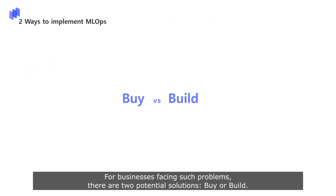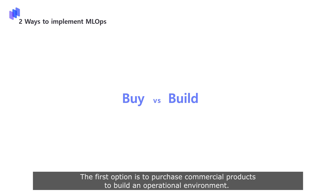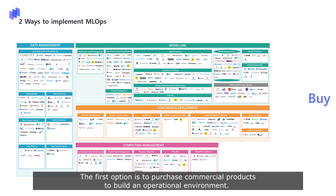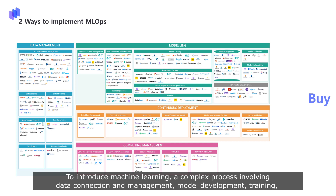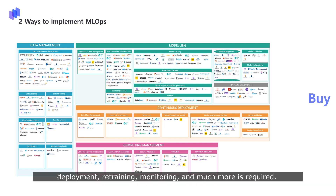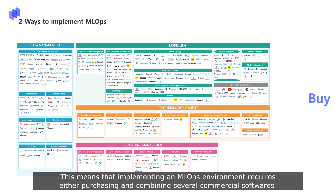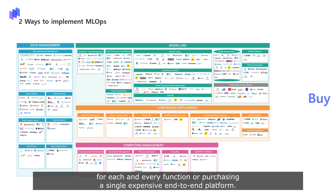For businesses facing such problems, there are two potential solutions: buy or build. The first option is to purchase commercial products to build an operational environment. To introduce machine learning, a complex process involving data connection and management, model development, training, deployment, retraining, monitoring, and much more is required. This means that implementing an MLOps environment requires either purchasing and combining several commercial softwares for each and every function, or purchasing a single expensive end-to-end platform.